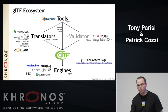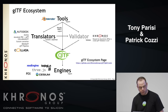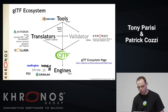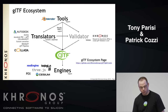There are several open source translators — converters from Collada, OBJ, and FBX from Autodesk. There's also a popular pipeline tool called ASSIMP that can import and export many formats including GLTF.